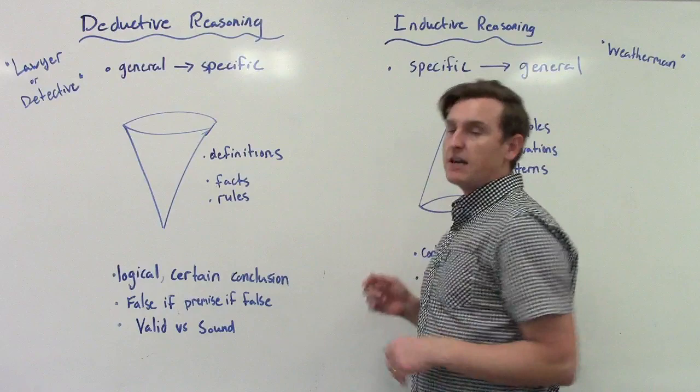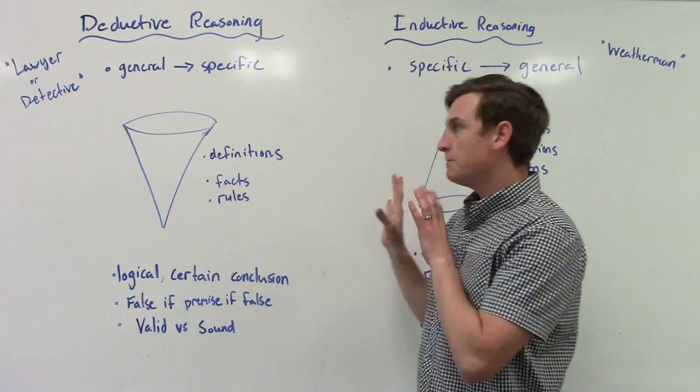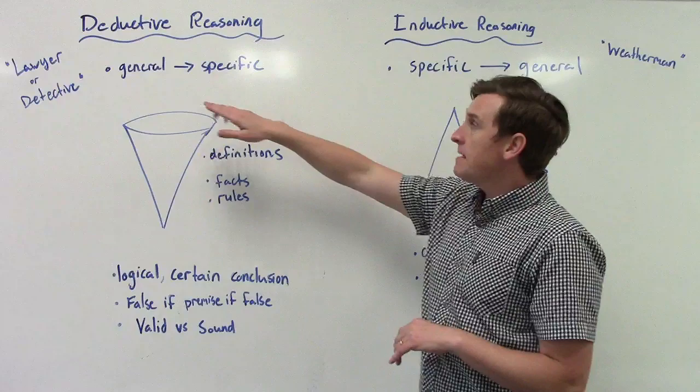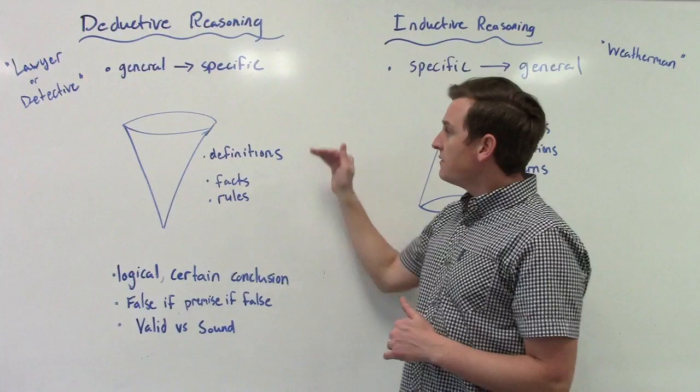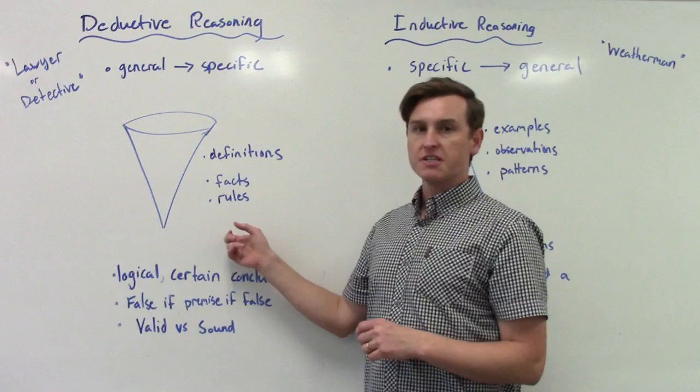Deductive reasoning we're going to start with over here. This is probably the kind that we're most familiar with in terms of mathematics. The main point here for deductive reasoning is that it goes from general to specific. You take a lot of definitions, facts, and rules, and you funnel it down to a logical certain conclusion for a specific case.